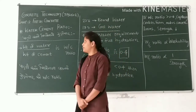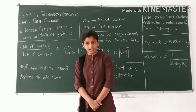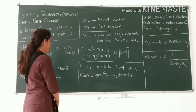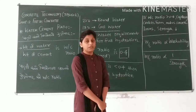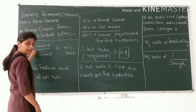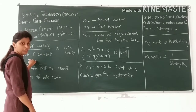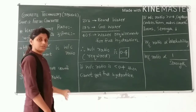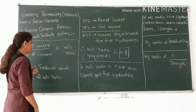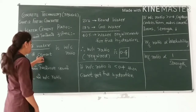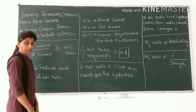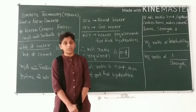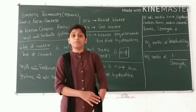We have covered the water-cement ratio. The definition of water-cement ratio is the rate of water divided by the rate of cement. In concrete, we have water and cement, and this ratio is the water-cement ratio.